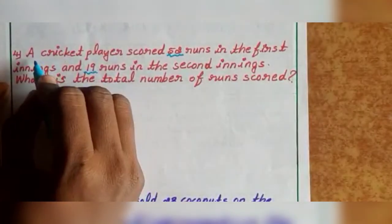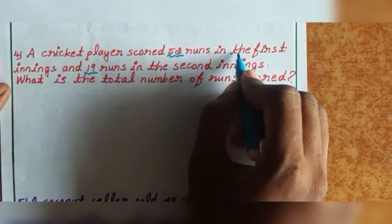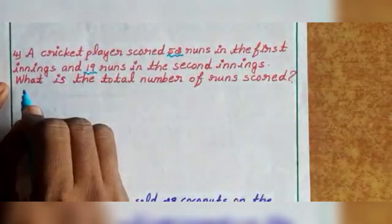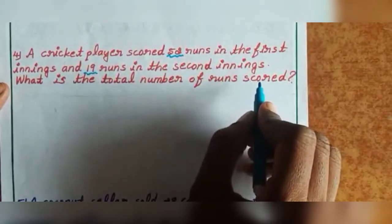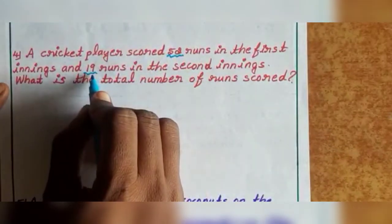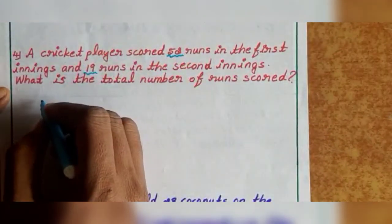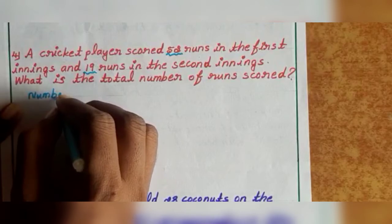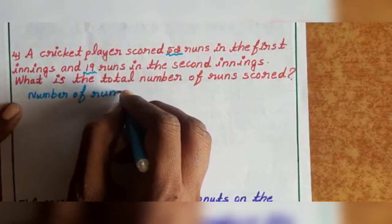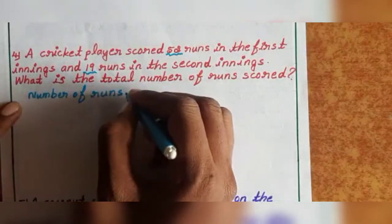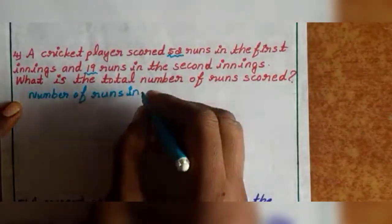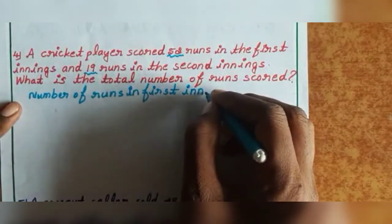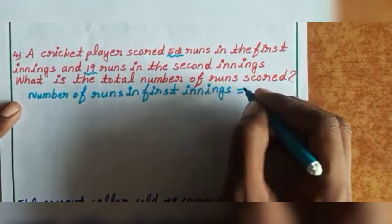Next, fourth one. A cricket player scored 52 runs in the first innings and 19 runs in the second innings. So what is the total number of runs scored? So you can add 52 plus 19 to get the answer. First, form the sentence. Write: number of runs in first innings — 52.